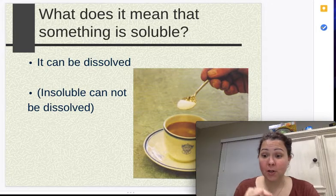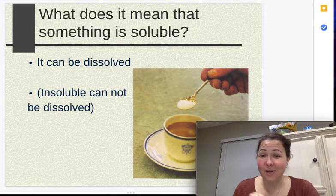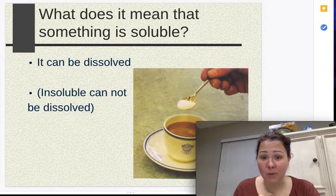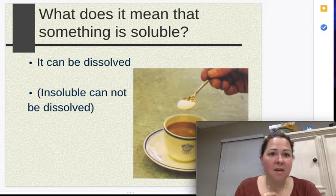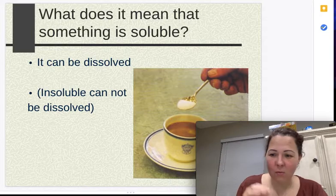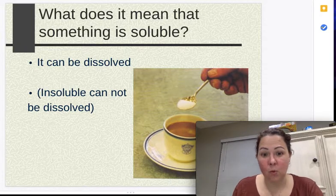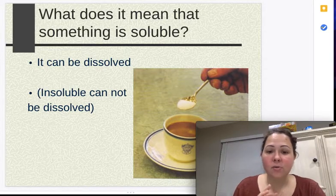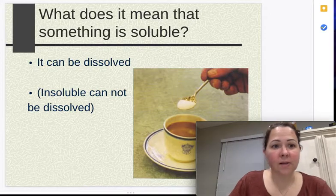For example, you put sugar into water. That sugar dissolves away, that sugar is soluble in water. But if I take a rock, like gravel, and put that into water, that rock is insoluble in water. It does not dissolve. So some things dissolve and some things do not.